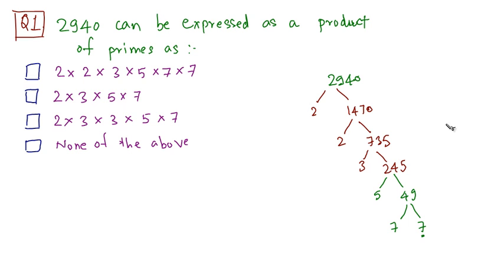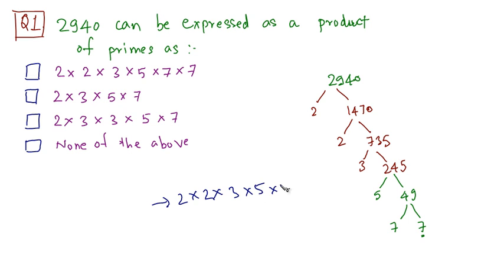So the prime factors of 2940 are 2, 2, 3, 5, 7, and 7. I can write it as 2 × 2 × 3 × 5 × 7 × 7. This matches the first option, so the answer is option number 1.